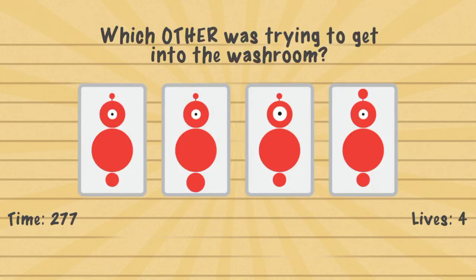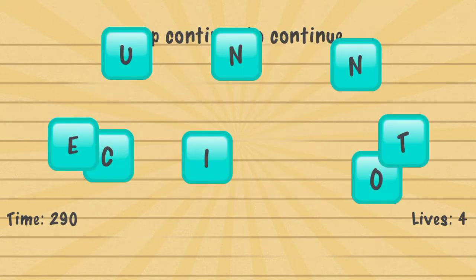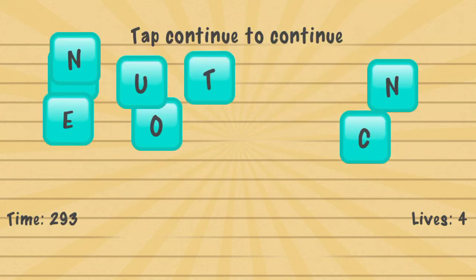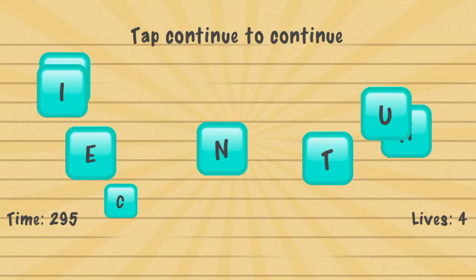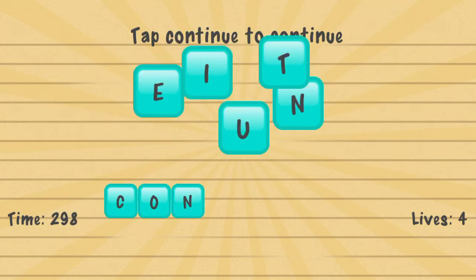Which other was trying to get into the washroom? Remember those robots from before in the 'sort the people' question — you have to tap what they looked like. Tap continue to continue — you click the buttons to spell out 'continue'.